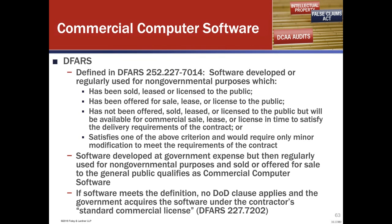If software meets the definition of commercial computer software, there's no DFAR clause that applies — instead it's the contractor's standard commercial license. I've recently been seeing some contracts where it says if your standard commercial license is not expressly incorporated in the contract as an addendum, it defaults back to FAR 52.227-14 under some non-DOD contracts. So it's very important that when you submit your proposal, you include your standard commercial software license and that it's also an addendum to the contract. Don't miss that key point.